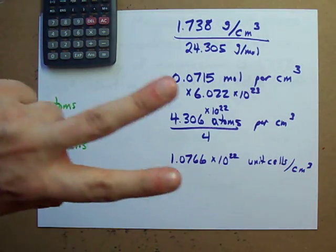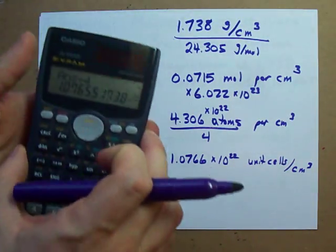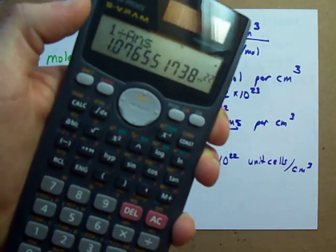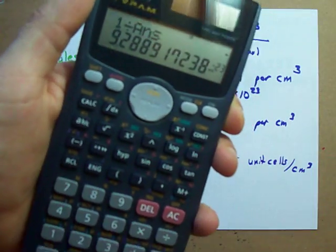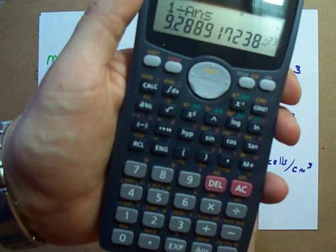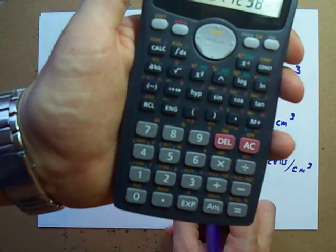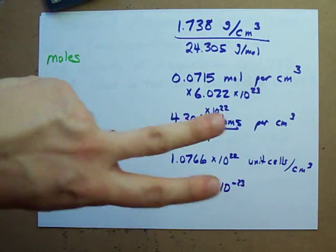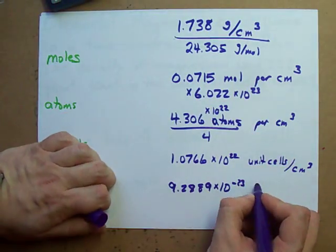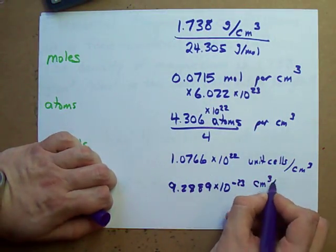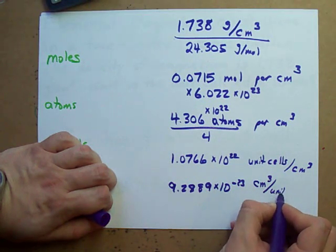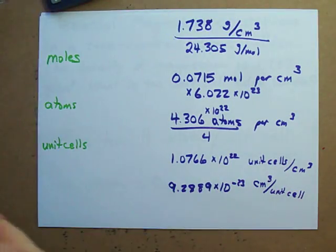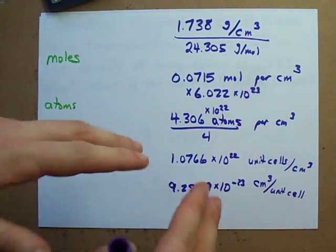And what I'm going to do is I'm just going to flip that. On your calculator, 1 divided by the answer that you had. Mine comes out to 9.2889 times 10 to the negative 23. If you take 1 divided by, you're actually going to flip your units. Now that's how many cubic centimeters there are per unit cell. See, that's the concept of a reciprocal. And you thought you'd never use it for math. This is awesome.